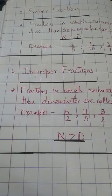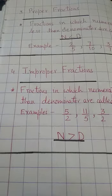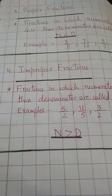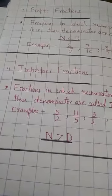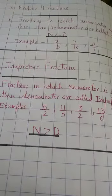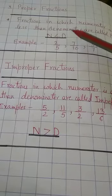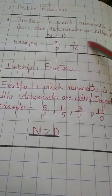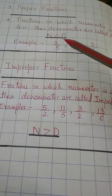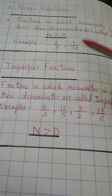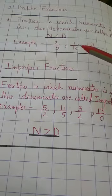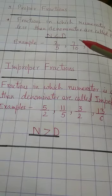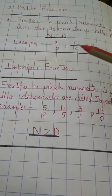Next are proper fractions and improper fractions — they are also very very important. Proper fractions are fractions in which the numerator is less than the denominator. Like your marks — when your teacher gives you marks, she always gives them in proper fraction form. Like you can get 7 out of 10, but you will never get 10 out of 7.